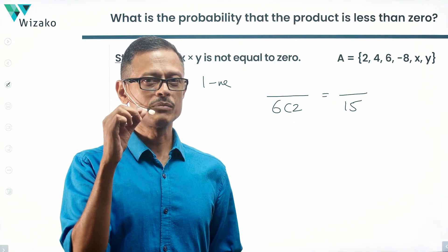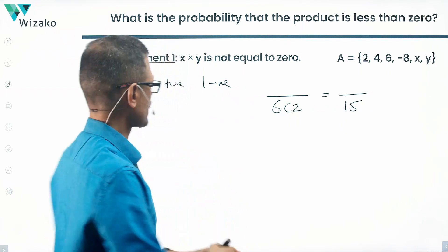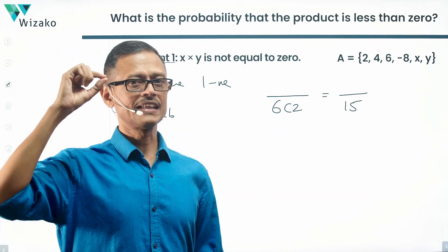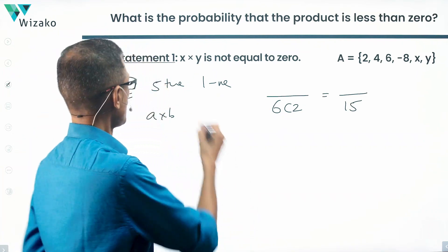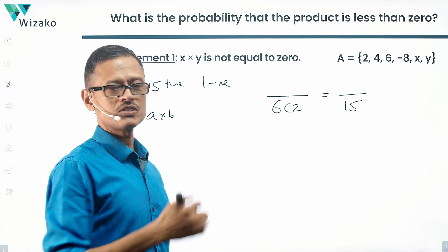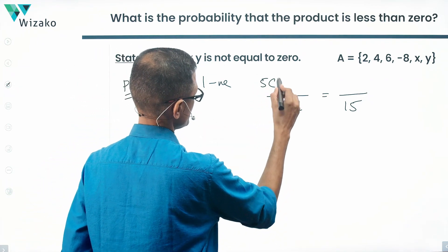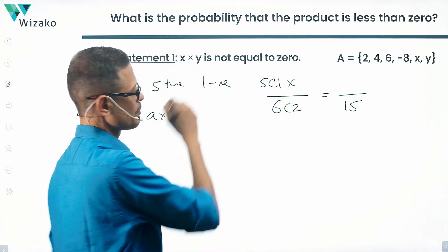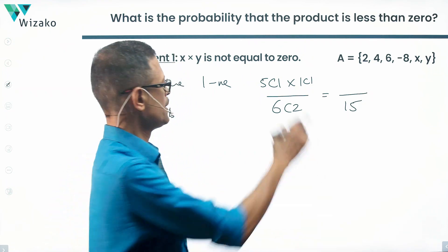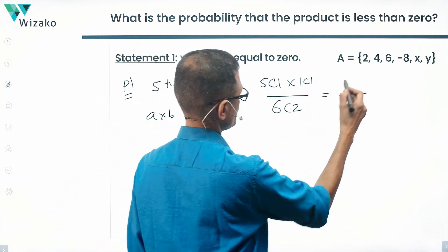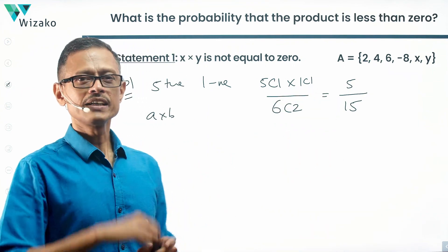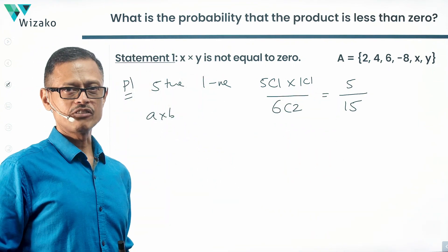In Possibility 1 — five positive, one negative — we select two numbers from six, so the denominator is 6C2 = 15. For the product to be negative, one number must be positive and one negative. That's 5C1 × 1C1 = 5. So the probability is 5/15 = 1/3.